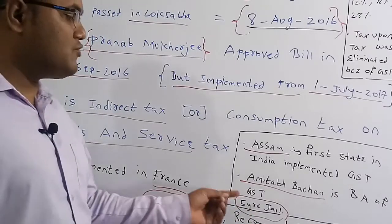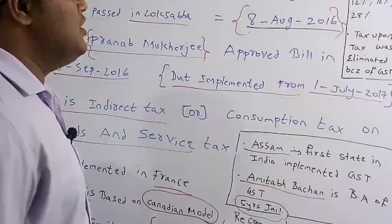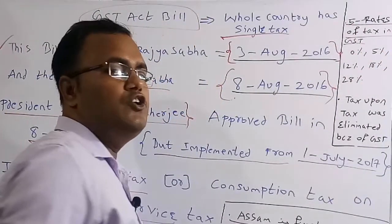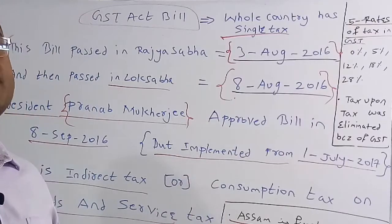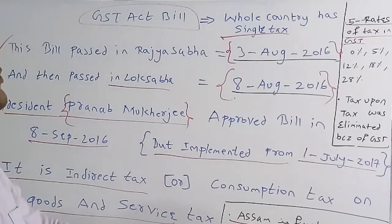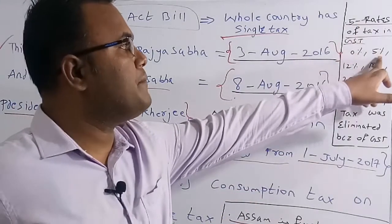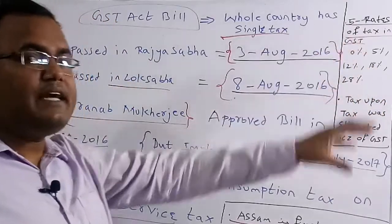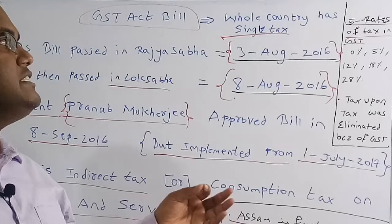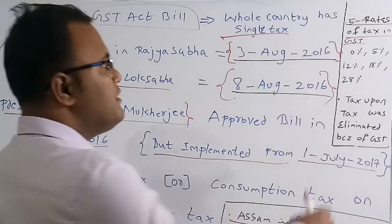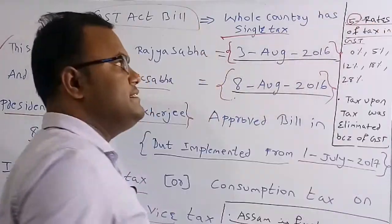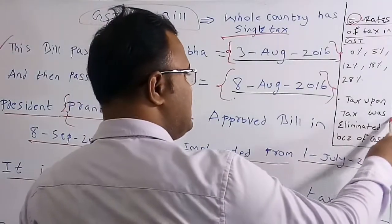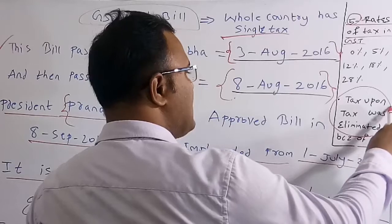There are five different rates of tax under GST: 0%, 5%, 12%, 18%, and 28%. This is a very important fact — five rates of tax are present in GST.